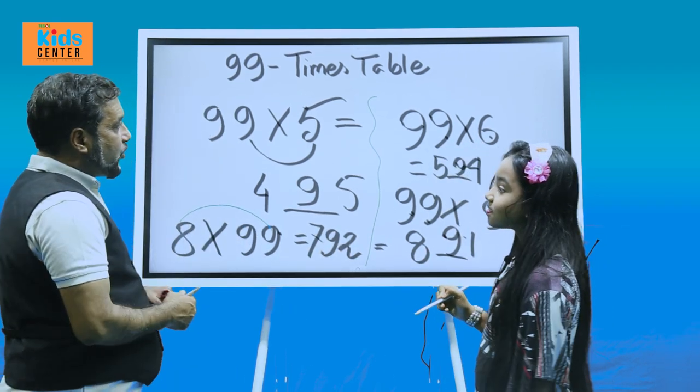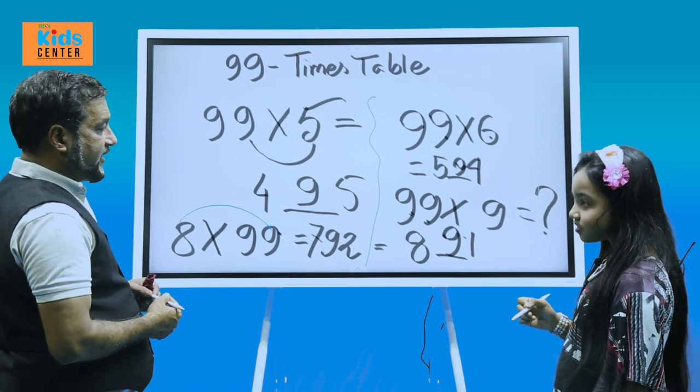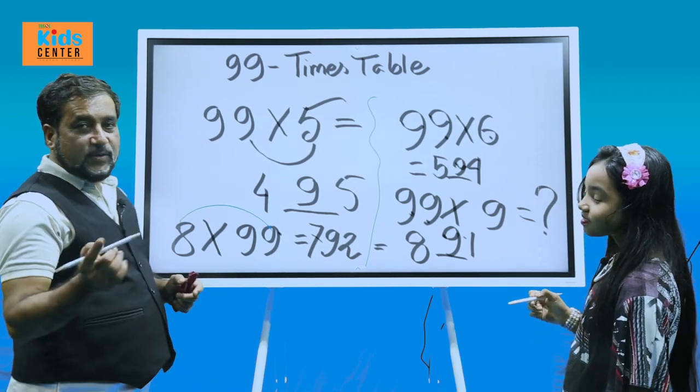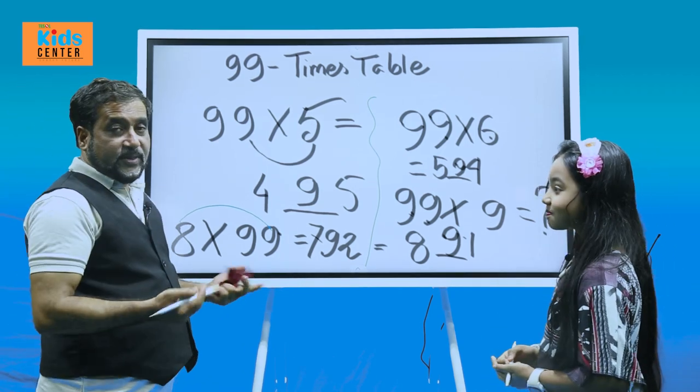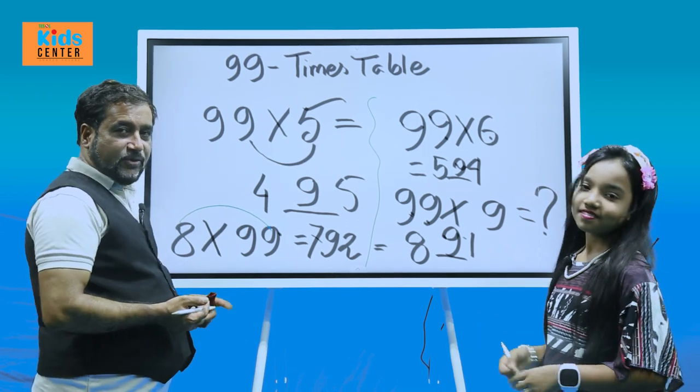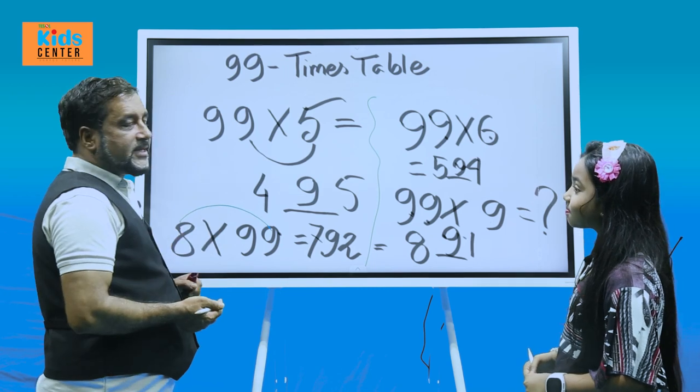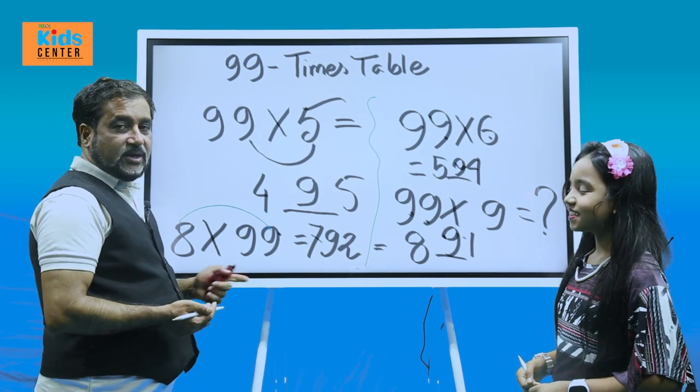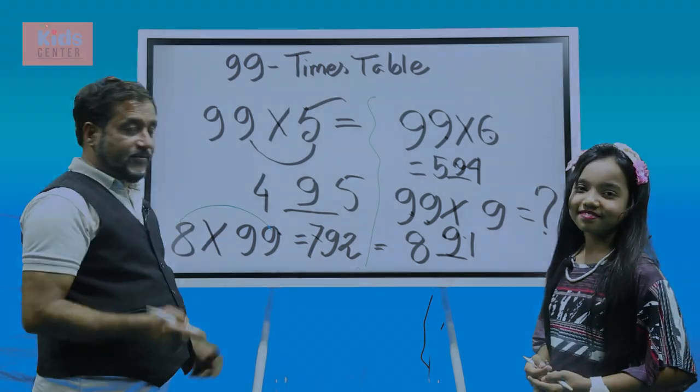That's good. Now, we understood the time stable of 99. Now, dear viewers, you can try to solve some other problems like 99 6's are, 99 4's are. So, it's really just like magical thing. You can learn. If you love mathematics, go for this.